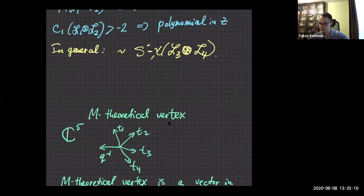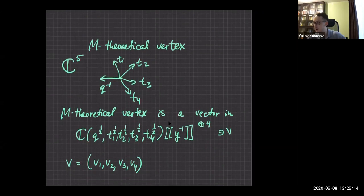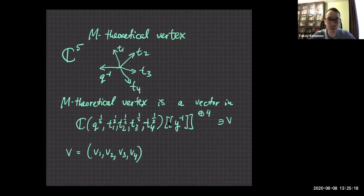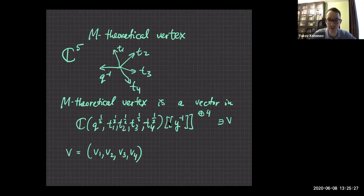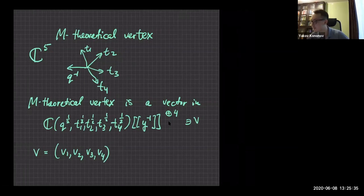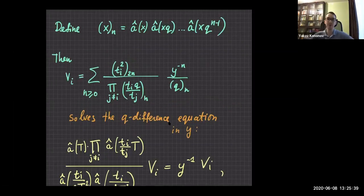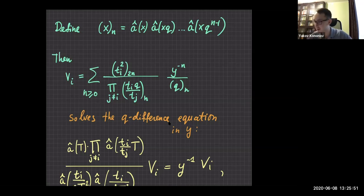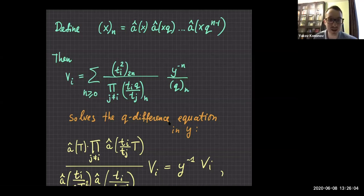This allows us to introduce the M-theoretical vertex for C5. It is a four-component vector with coefficients depending on all variables, expressed as a Laurent series in Y inverse. If we define an analog of the Pochhammer symbol — X_N as the product of N shifted A-hat functions of X — then the vertex is a series similar to hypergeometric, but with 2N instead of N in the numerator.